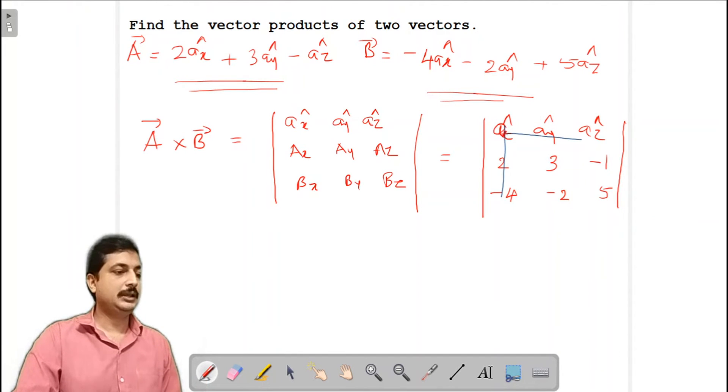So when I am finding ax cap, nowadays you use calculators but otherwise this into this minus this into this ax cap. So that way you can proceed. So 5 into 3 that is 15, 15 minus 2, this much ax cap minus, second term will be minus. This term is minus. So minus ay cap, 5 into 2, 10, minus 4 ay cap plus, last term.